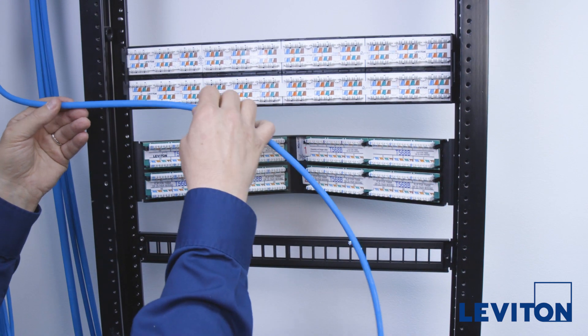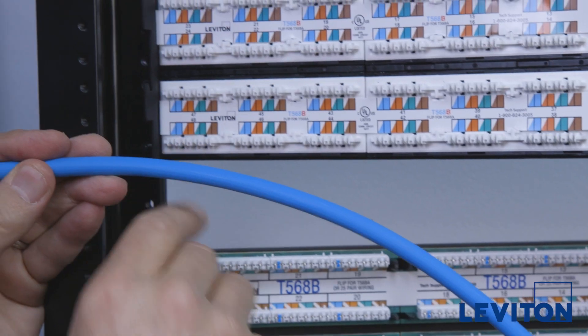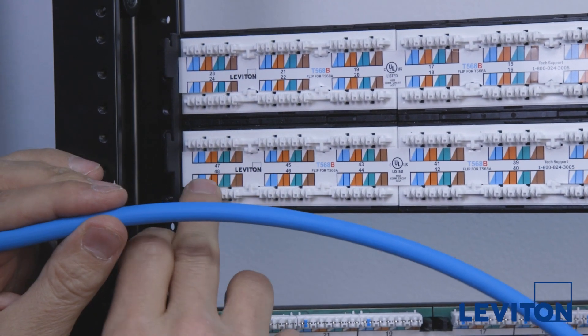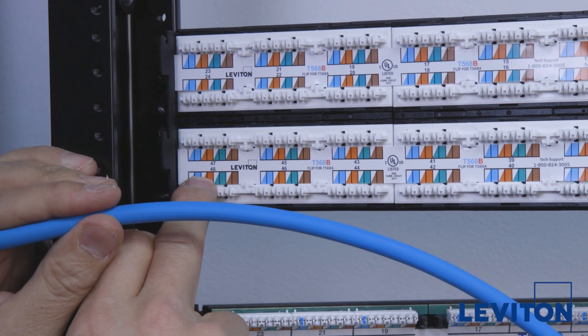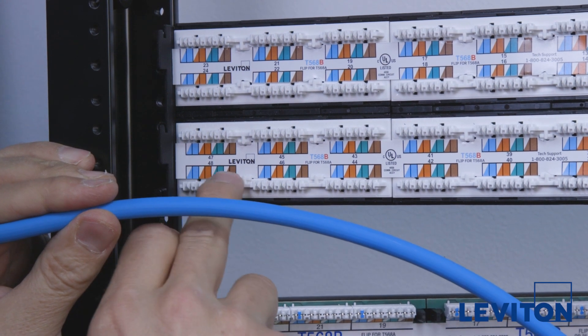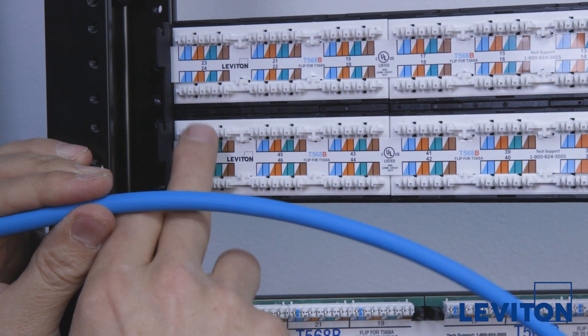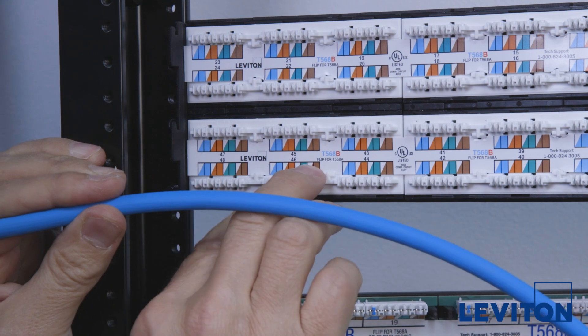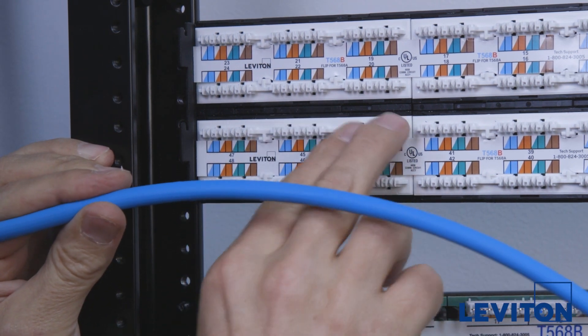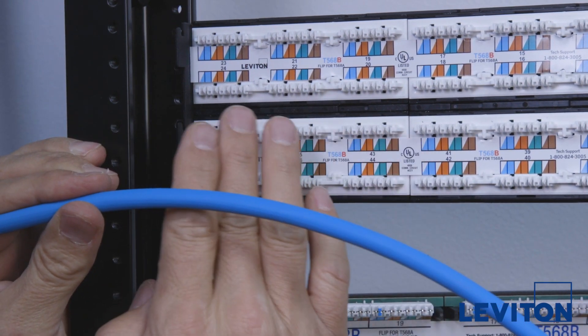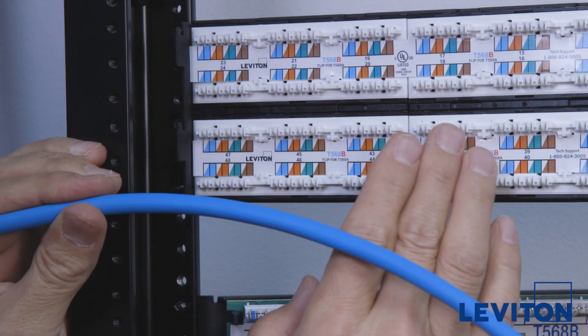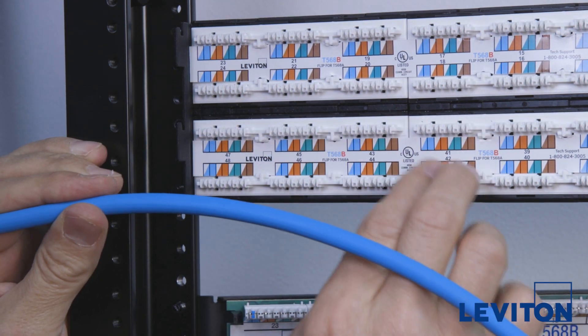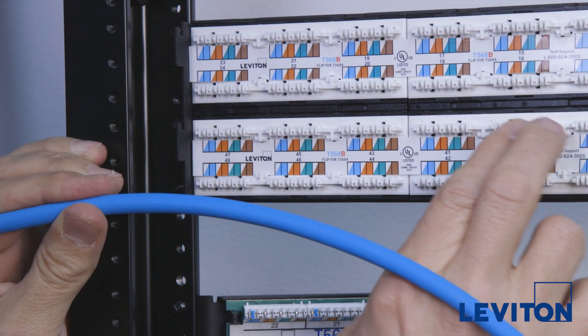Using the Category 6A cable from the left side of the rack, terminate the bottom outboard connector on the left side of the flat Category 6A panel first. Following this, terminate the top outboard connector, then the second connector on the bottom, then the second one on the top, and so forth. Following this zigzag pattern allows you to build up the cables in a way that maintains the best possible organization.